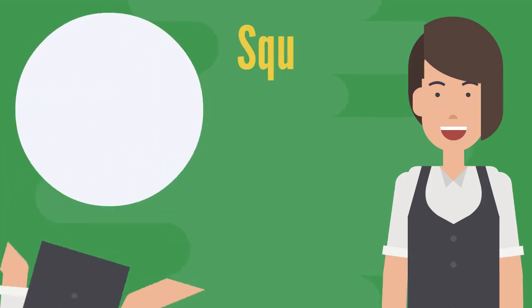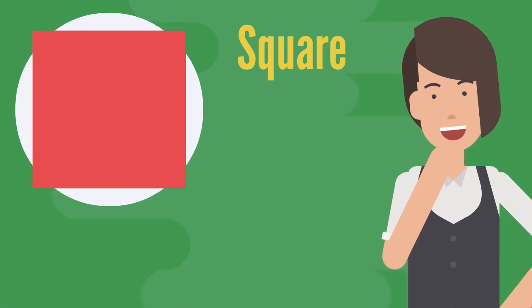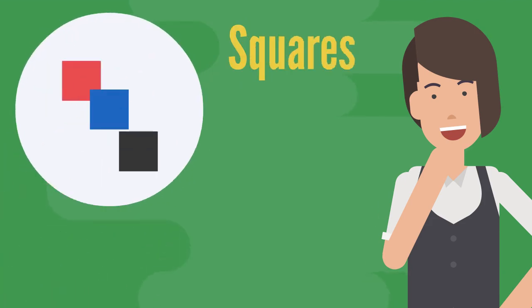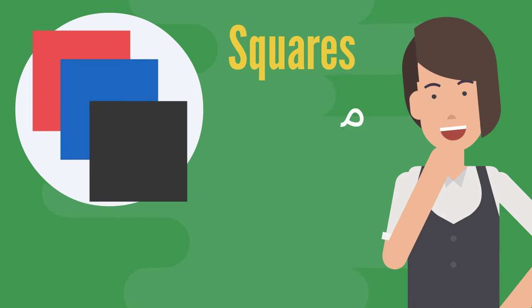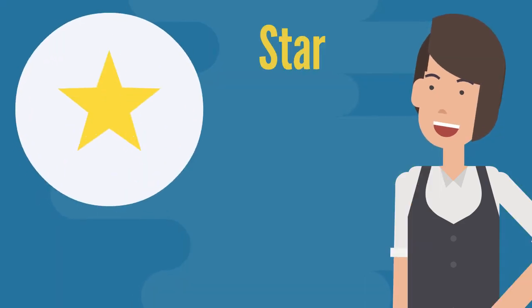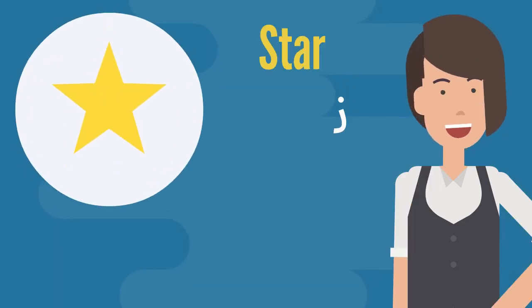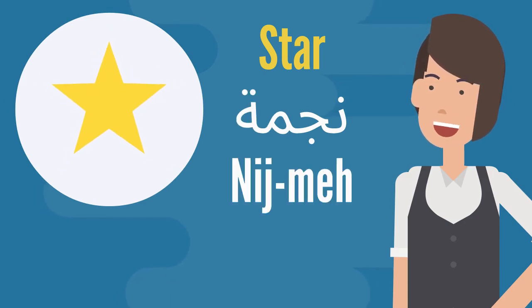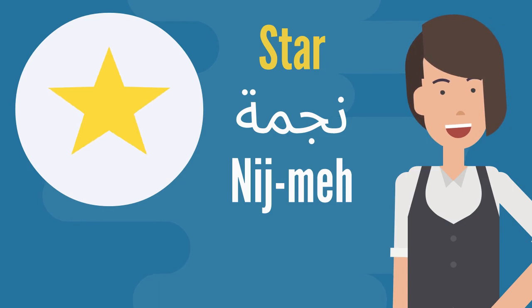Square — مربع. Squares — مربعات. Star — نجمة. Stars — نجوم.